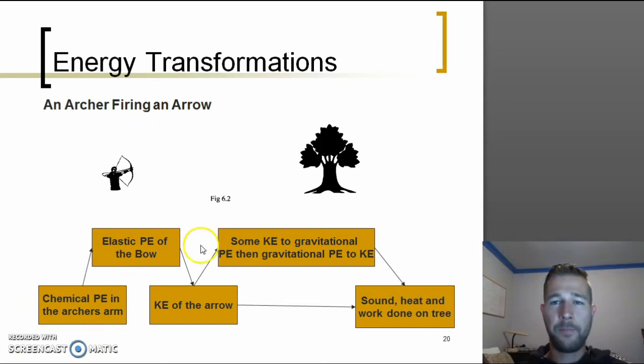Now when it hits the tree, some of it is converted to sound energy, some is heat energy and some is also the work done on the tree, say the penetration of the tree and maybe splitting it, splitting the bark. Overall, the amount of energy that the archer pulled back can be found in the system after he releases the bow, just in different forms.